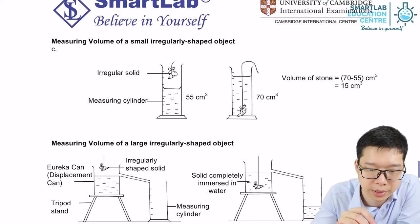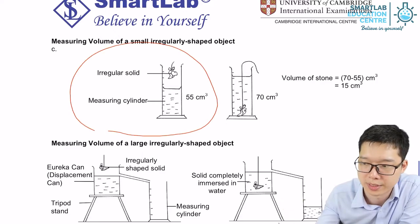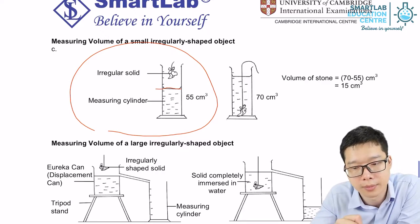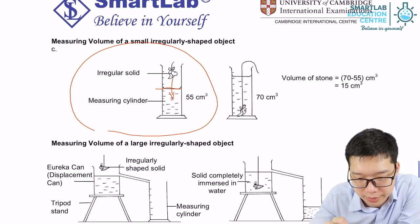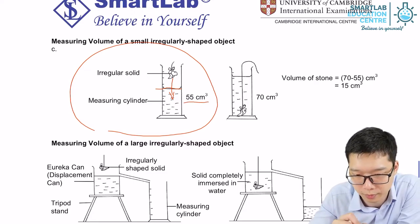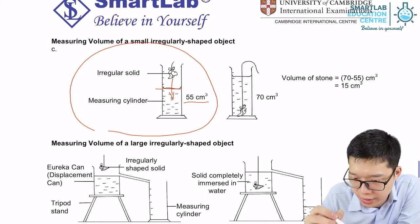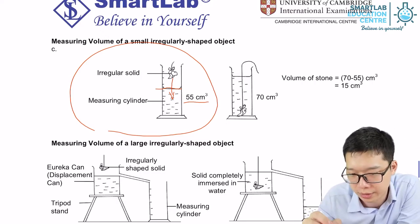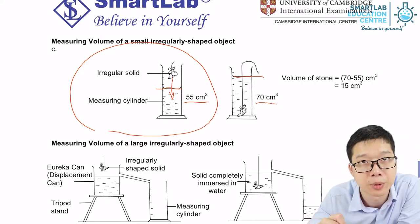So how are you going to measure irregular shape? First, we must have a measuring cylinder with a certain amount of liquid inside. And we get a reading, 55 cm cubed. And we put the irregular shaped stone or whatever object into, submerge the whole object into the water. And then we get a reading again, 70 cm cubed, for example.